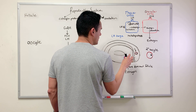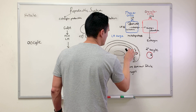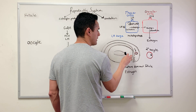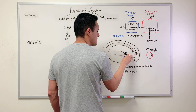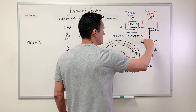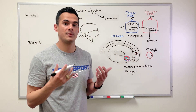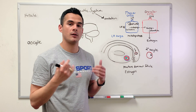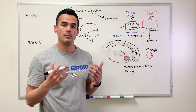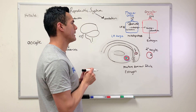Once estrogen is present within the follicle, it helps develop the mature dominant follicle — we need estrogen to reach that point. Estrogen also enters the bloodstream and produces its effects on feminine characteristics, including the development of women's reproductive organs.